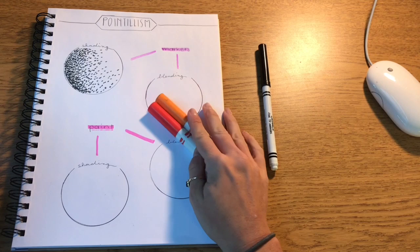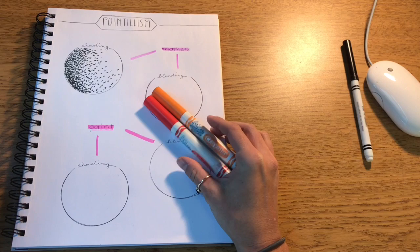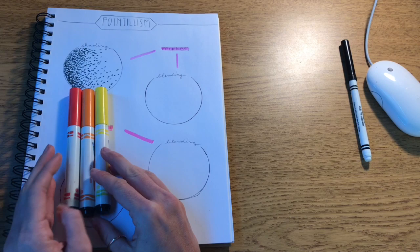Now I'm gonna blend some colors together using pointillism. So I'm going to be blending red and orange, and I think I might actually add a little bit of yellow in there. So I'm gonna use all of my warm colors and I'm gonna start with the darkest one first.